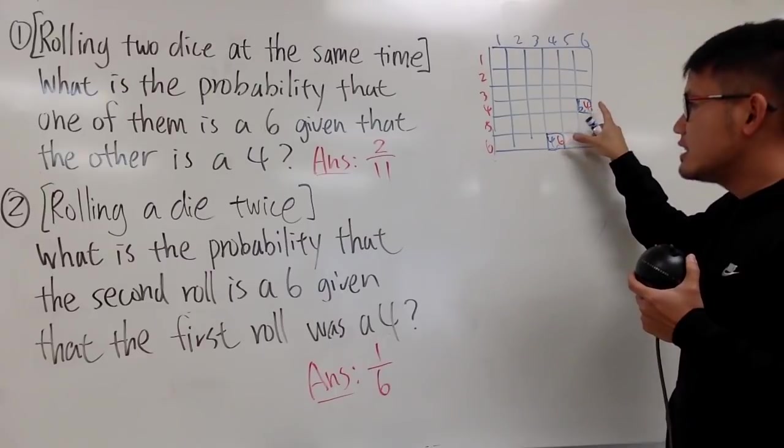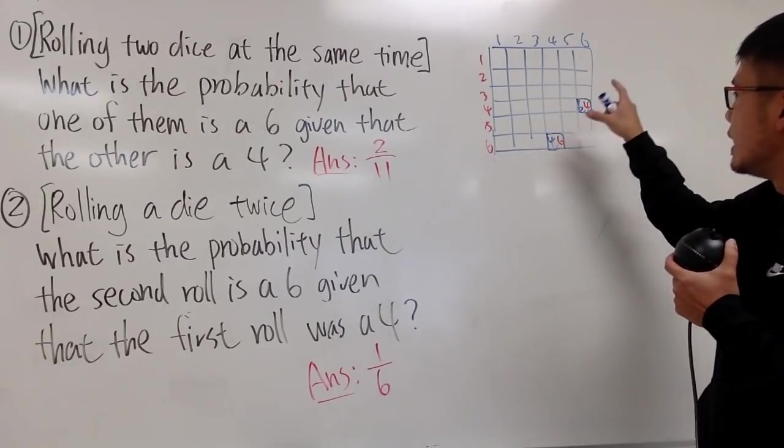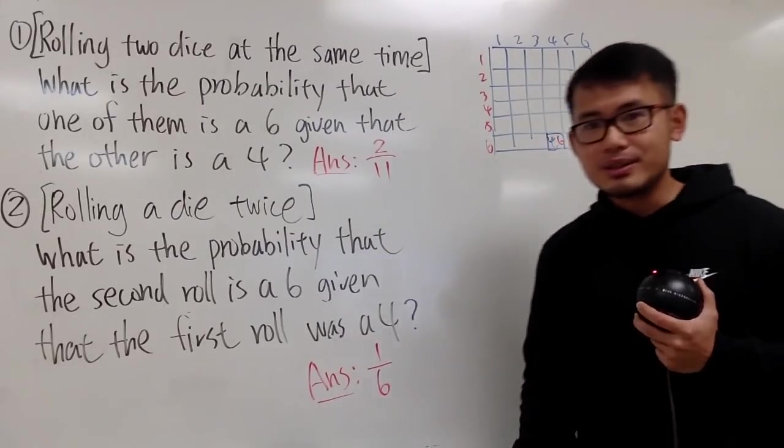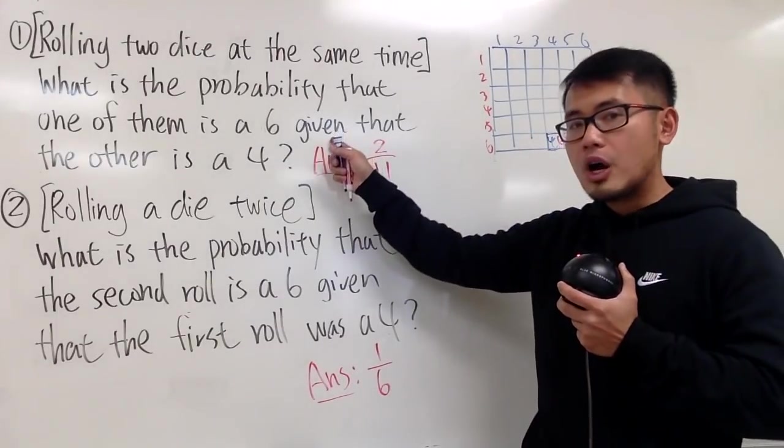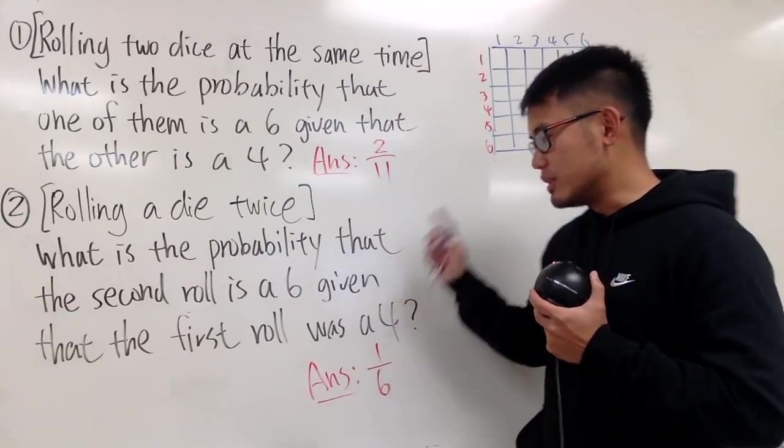So, the answer to just that, it would be 2 out of 36. Now, right here, we do have the given information, so it's actually different.